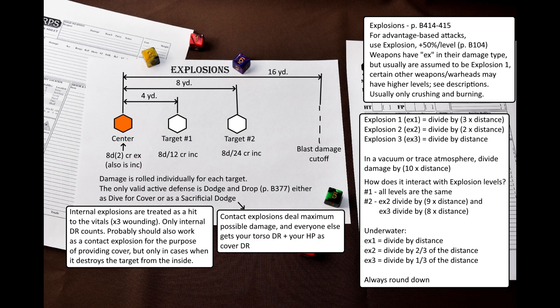Things can get even worse. If you happen to swallow a grenade, or get hit by an attack that has follow-up explosive attack, then the explosion becomes an internal explosion. This means that it is treated as a hit to the vitals with a triple wounding modifier, and your DR has no effect at all, unless it is internal. It isn't said anywhere, but I think it's fair to assume that this applies even to targets with no vitals, and that everyone else gets your torso DR plus your HP as cover DR, but only if this explosion brings you to minus 10 times HP, destroying your body in the process.